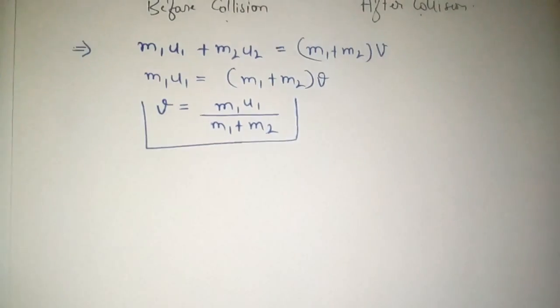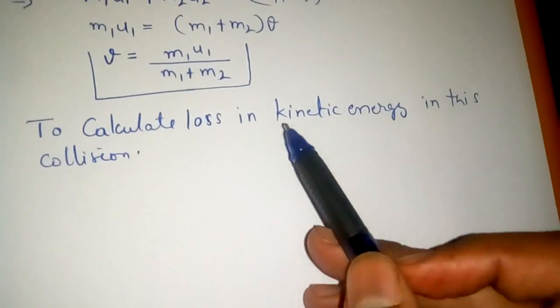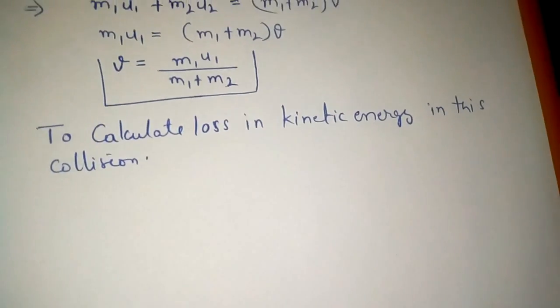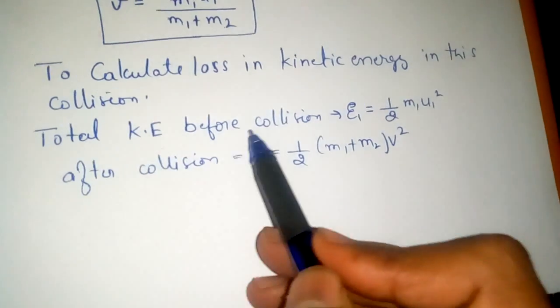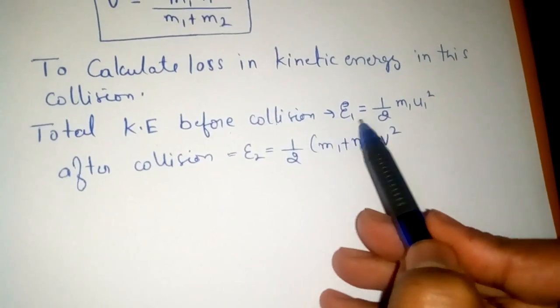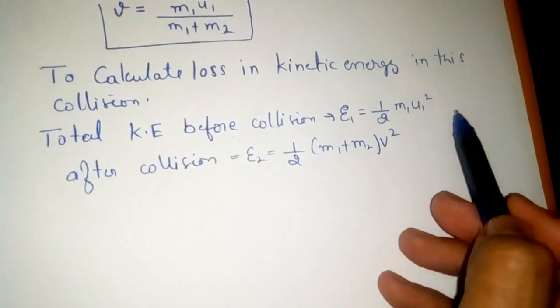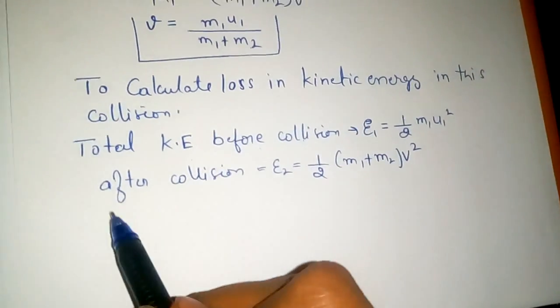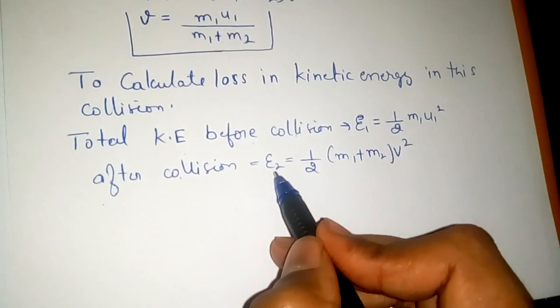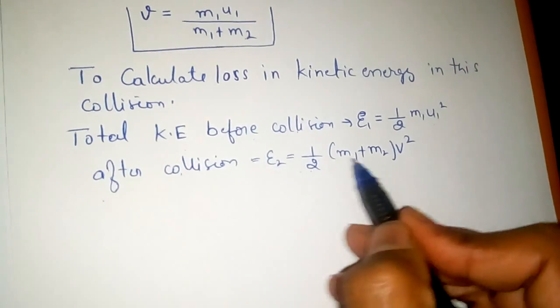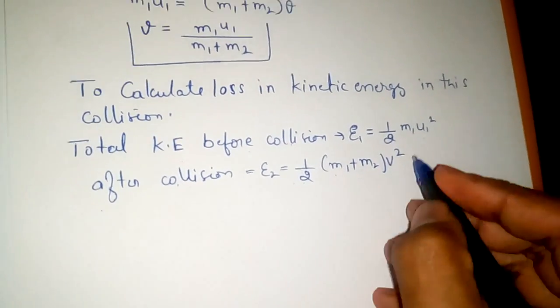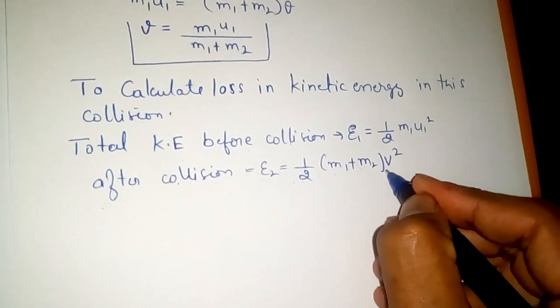To calculate loss in kinetic energy in this collision, total kinetic energy before collision e1 is equal to half m1 u1 square as u2 was zero. And after collision total kinetic energy e2 is equal to half m1 plus m2 into v square.